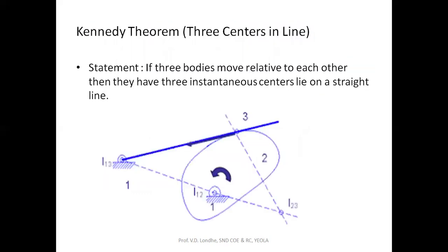Kennedy's theorem states that when any two or more bodies have relative motion with respect to each other, their ICRs lie on one straight line. For example, with three links — a fixed link, a rotary link, and a binary link — the ICRs 1-2, 1-3, and 2-3 all lie on one straight line. This is Kennedy's theorem: if two or more bodies have relative motion, their ICRs are collinear.